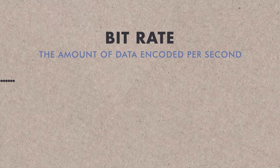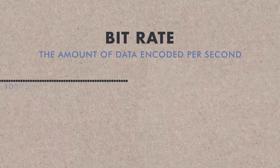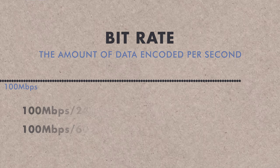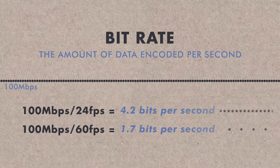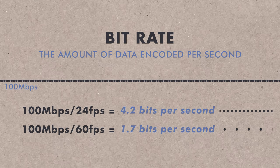One other quick thing to note about 24 versus 60 frames per second is your bit rate. If we're shooting at a consistent bit rate — let's say 100 megabits — at 24 frames per second we're actually getting more bits per frame compared to 60 frames per second. So you're going to have a slightly higher quality video if your bit rate is consistent across these frame rates.